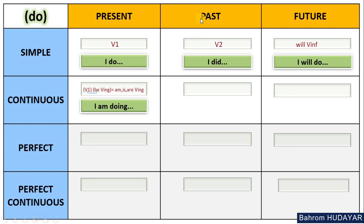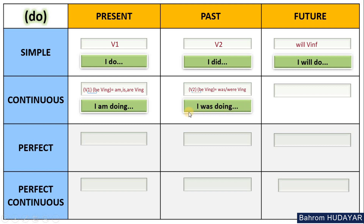Let's continue with Past Continuous. If you don't know Past Continuous, do the multiplication: write the formula of past — verb two — and the formula of continuous — be verb-ing. The result will be 'was/were + verb-ing.' The second form of 'am/is/are' is 'was' or 'were.' The verb of the sentence is 'do', so: 'I was doing something', 'you were doing something', 'she was doing something.'